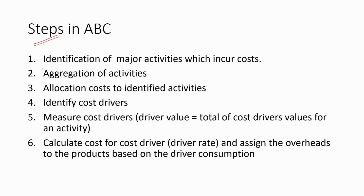Now let's discuss the steps to follow in activity-based costing. There are six steps. First, identification of major activities which incur costs. Second, aggregation of activities. Third, allocation of costs to identified activities. Fourth, identify cost drivers. Fifth, measure cost drivers — this is known as the driver value, which equals the total of cost driver values for an activity. Sixth, calculate the cost per cost driver — this is known as the driver rate, similar to the OAR under absorption costing — and assign the overheads to products based on driver consumption.